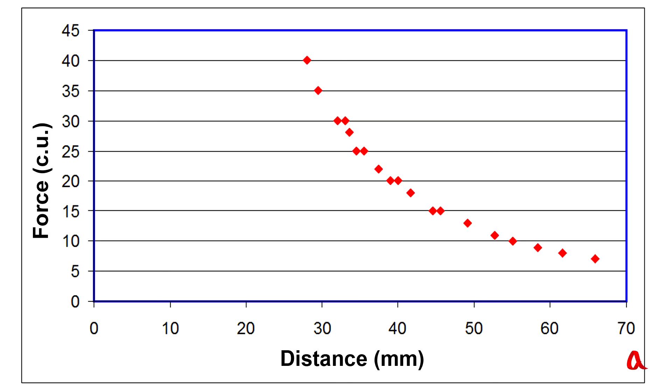Here is a graph that shows how this force depends on the distance between the centers of the balls. Let's select a power function that approximates these points in the best way. We see that the degree in the denominator is close to 2. The more accurate the measurements are, the less this indicator differs from 2.